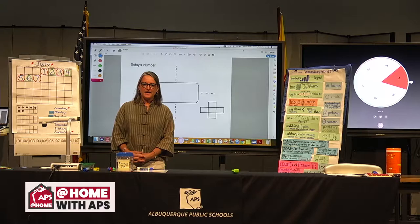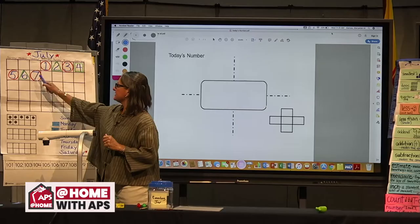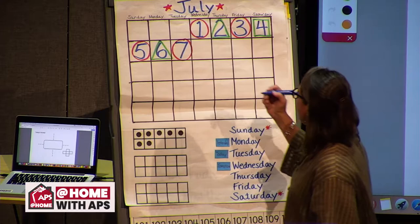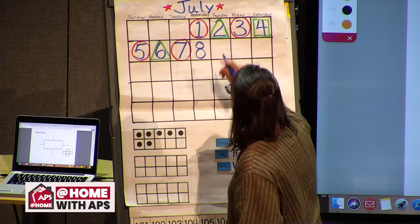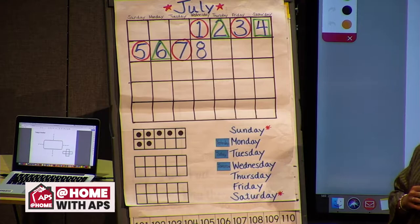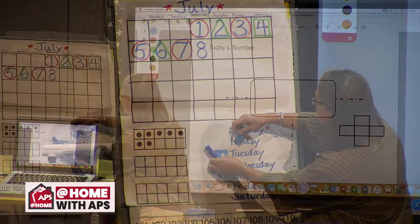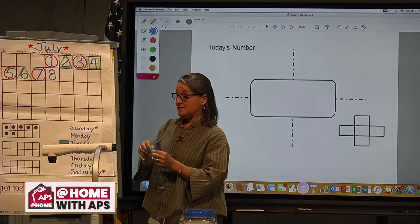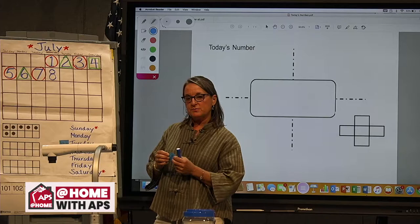Today is — what day is today? Yesterday was the 7th of July, so that means today must be the 8th of July. And we know what day of the week it is — yesterday was Tuesday, so that means today must be Wednesday. And what day of the week will tomorrow be? That's right, tomorrow will be Thursday. Nice job.